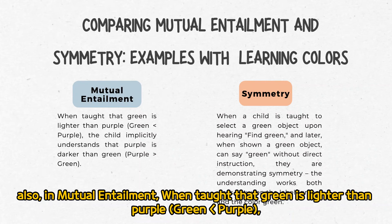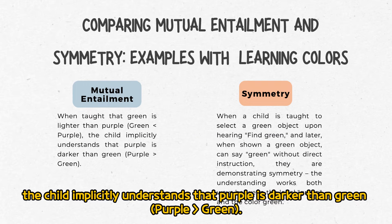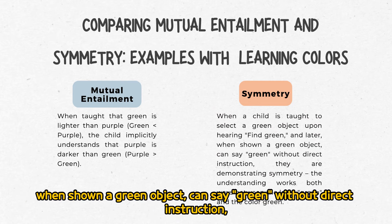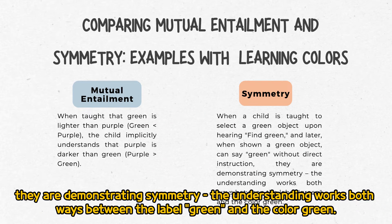Also, in mutual entailment, when taught that green is lighter than purple, the child implicitly understands that purple is darker than green. In symmetry, when a child is taught to select a green object upon hearing 'find green,' and later, when shown a green object, can say 'green' without direct instruction — they are demonstrating symmetry. The understanding works both ways between the label 'green' and the color green.